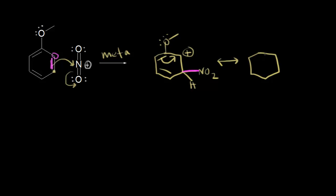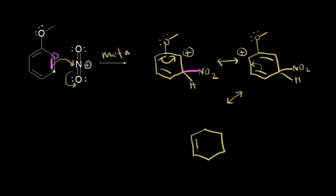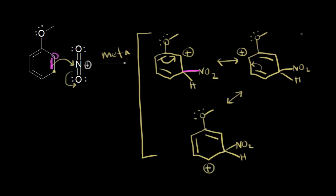Drawing a resonance structure for the meta attack: I move the pi electrons over, with the nitro group still in the meta position to the methoxy substituent, and the +1 formal charge shifts to this carbon. I can draw one more by moving these pi electrons over again, giving the methoxy substituent, the nitro group, and the positive charge now on this carbon down here. That's it — I can only draw three resonance structures for a meta attack.